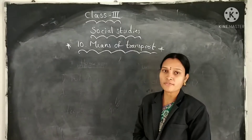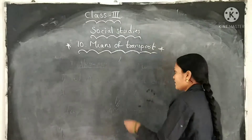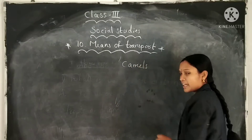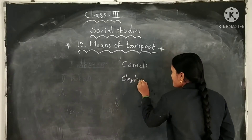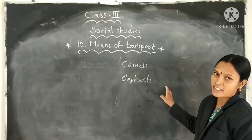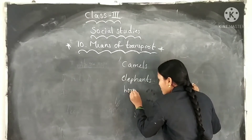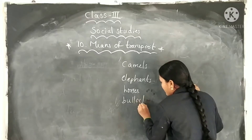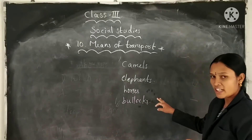Tell me students, which animals are used for travelling? Camels. Elephants are used for travelling in forest areas. And horses. Bullocks. Bullocks are used for travelling in village areas.